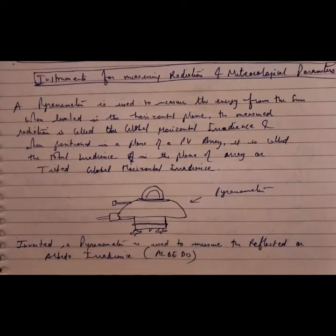a PV array, it is called the total irradiation in the plane of the array, or we can say tilted global horizontal irradiation. So this is about the tilted position. And when it is inverted—inverted means it is placed downside—